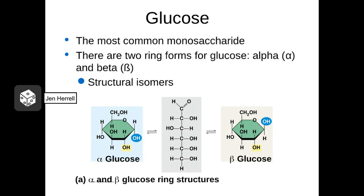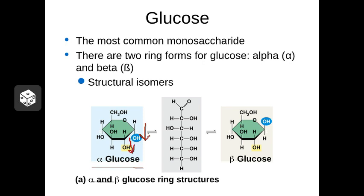Two different forms of glucose exist — we call these structural isomers. Structural isomers have the same chemical formula but slightly different structures. In alpha glucose, the hydroxyl groups on the relevant carbons both stick down under the molecule. In beta glucose, one hydroxyl group sticks up and the one right next to it sticks down. That difference will matter when these monomers are used to build bigger polymers, as we'll see later.